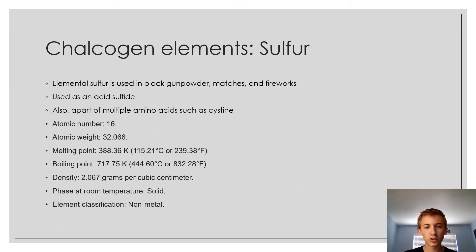Going back to the chalcogen elements, sulfur here is used in black gunpowder, matches and fireworks, and is used for acids in hydrogen sulfide and also a part of multiple amino acids such as cysteine. Here are the properties of it. Most notable, the melting and boiling points being on the lower side.